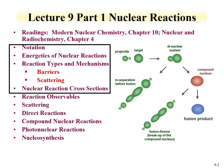Within Part 2 of the lecture on nuclear reactions, we'll talk about some observables with reactions, scattering and direct reactions in more detail, compound nuclear reactions, photonuclear reactions where a photon is one of the particles, and nucleosynthesis — where elements are made in stellar processes.